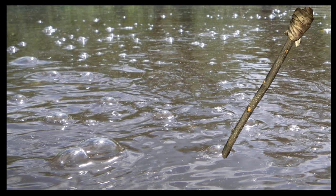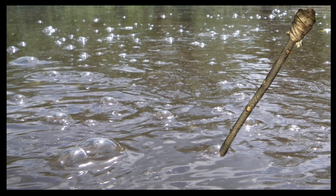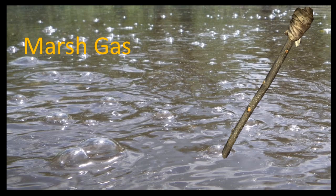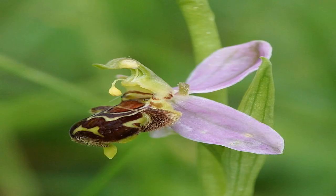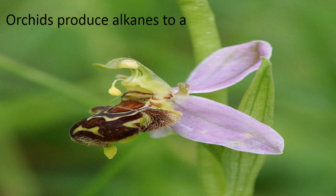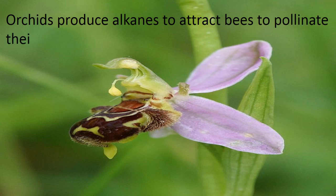Here is something very interesting — you may see bubbles coming up out of the mud. These bubbles are the hydrocarbon gas methane, which is also called marsh gas. Alkanes are also very important from a pollination point of view. Orchids produce alkanes to attract bees to pollinate their flowers.